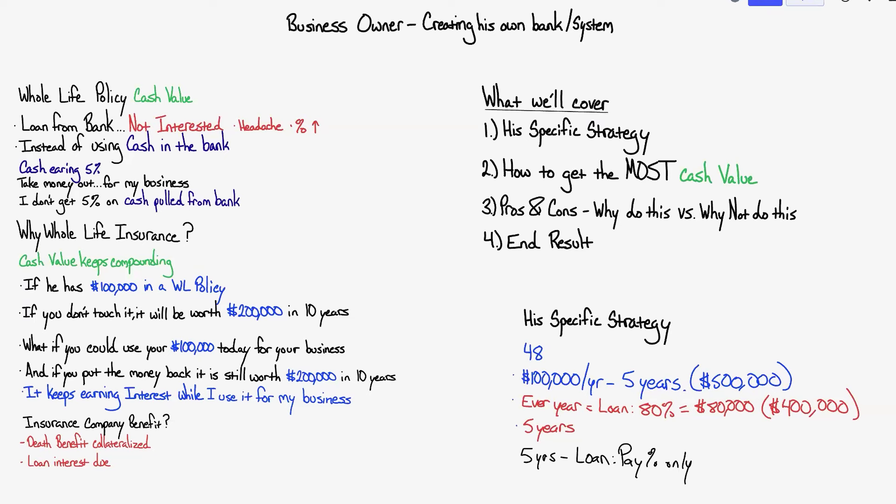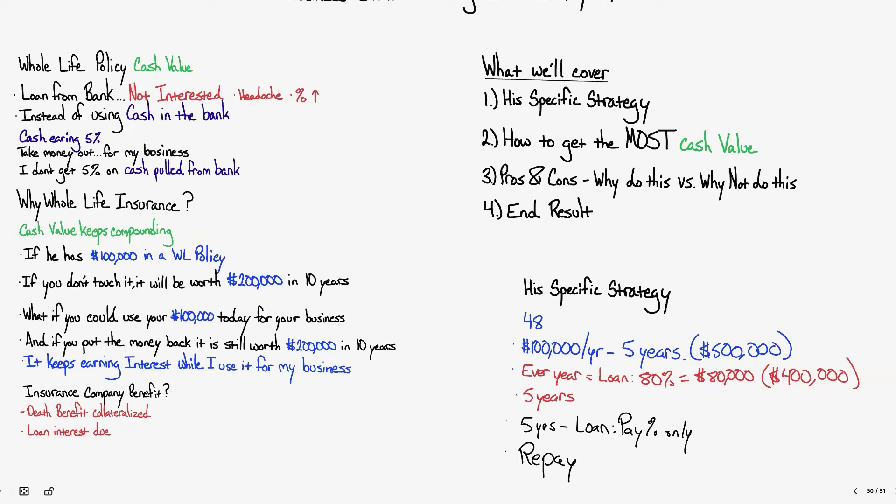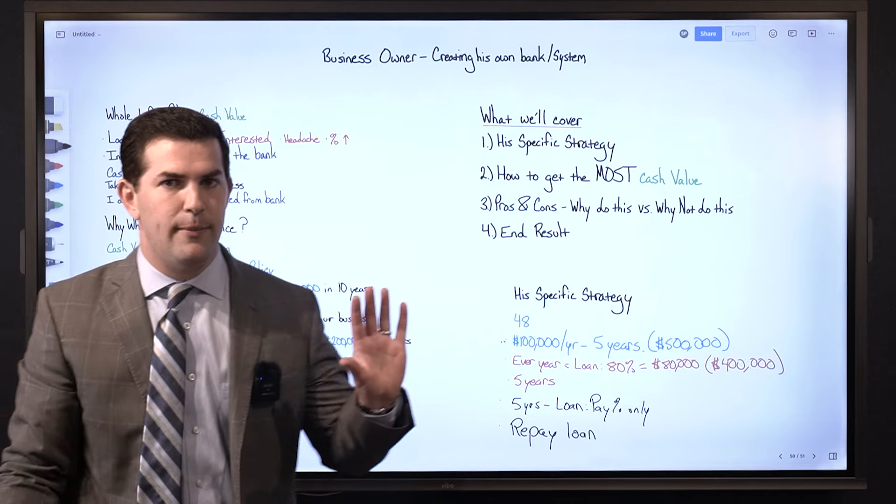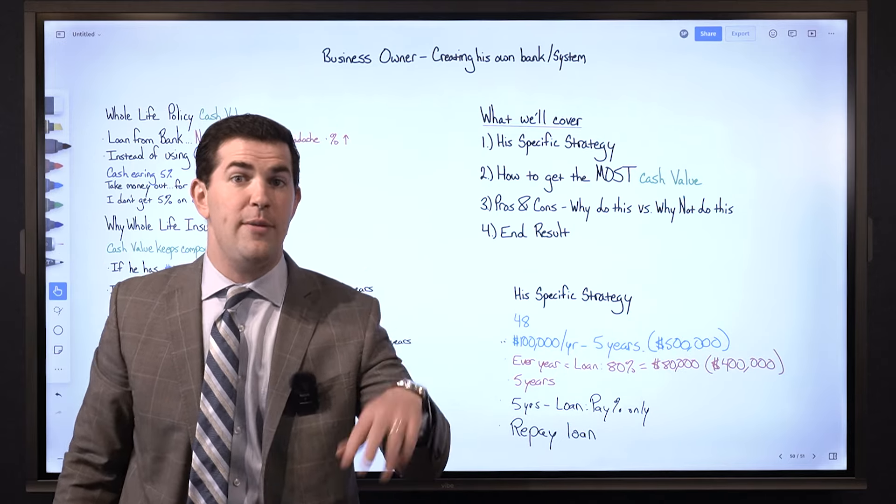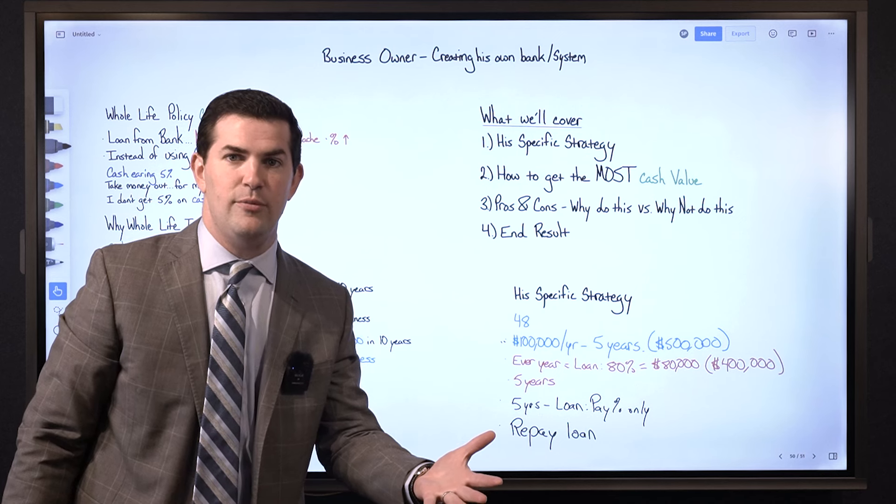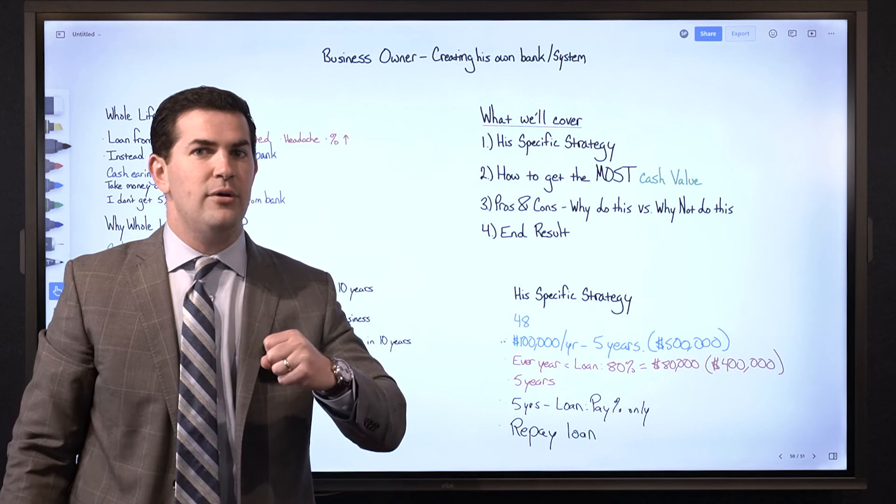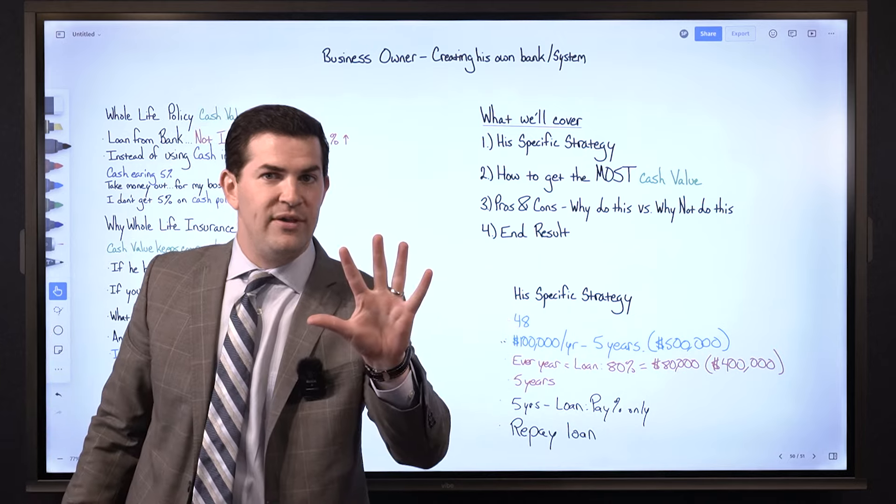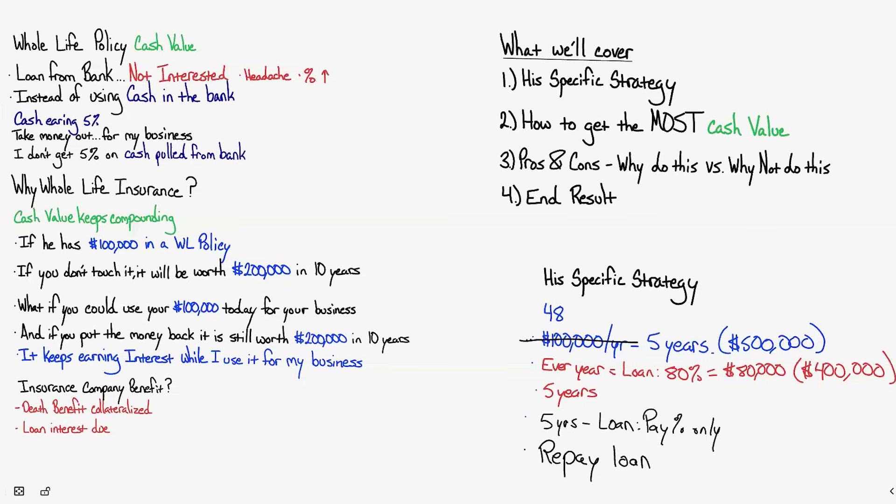During that five-year period I'll pay interest only and then after that I'll start to repay the loan because at that point in time I'm no longer funding the policy. So in the beginning money goes into the policy in premium and PUA payments, I'm maximizing the cash value, I'm taking money out, I'm also paying loan interest at the same time. Then after five years I stop this and then begin to dedicate resources to repaying the loan.